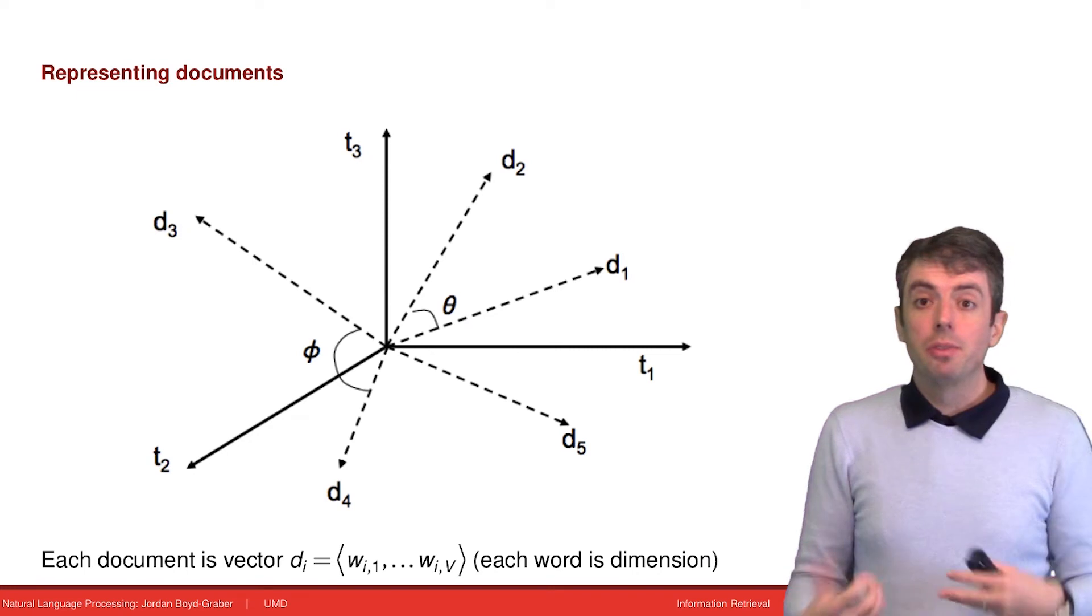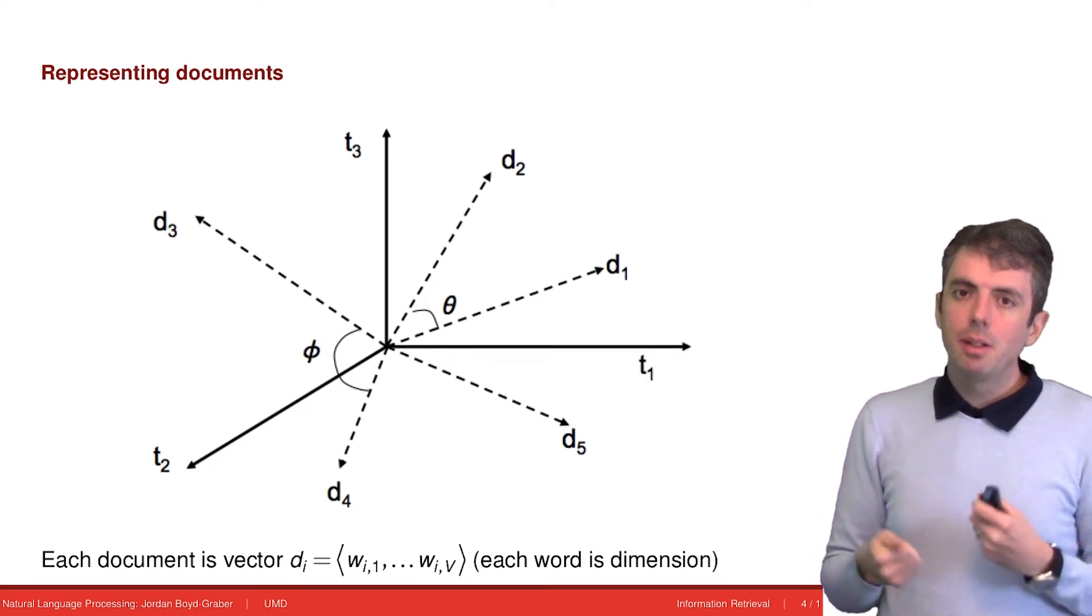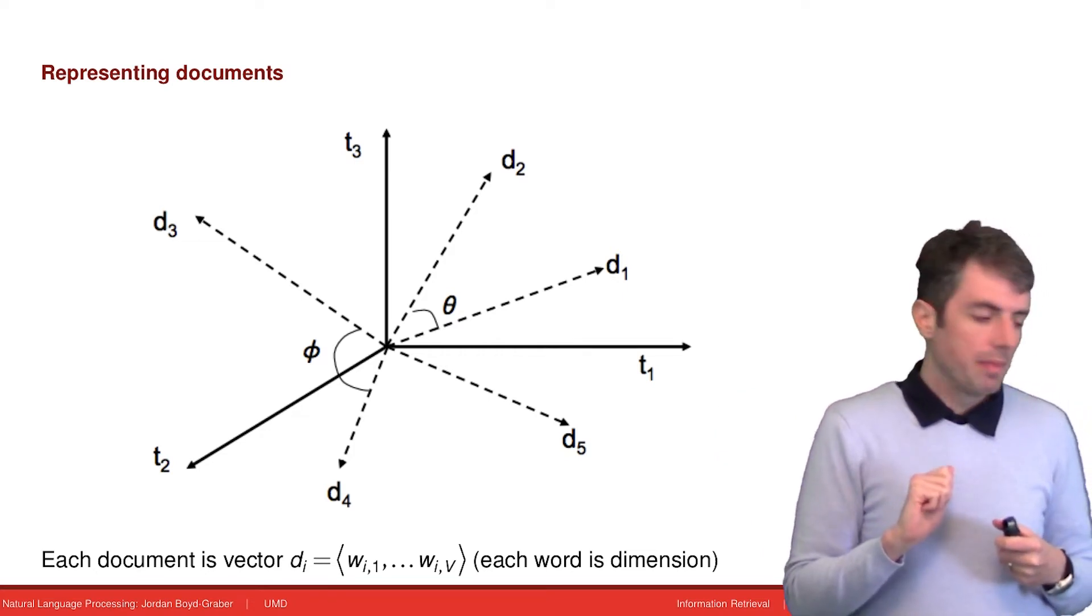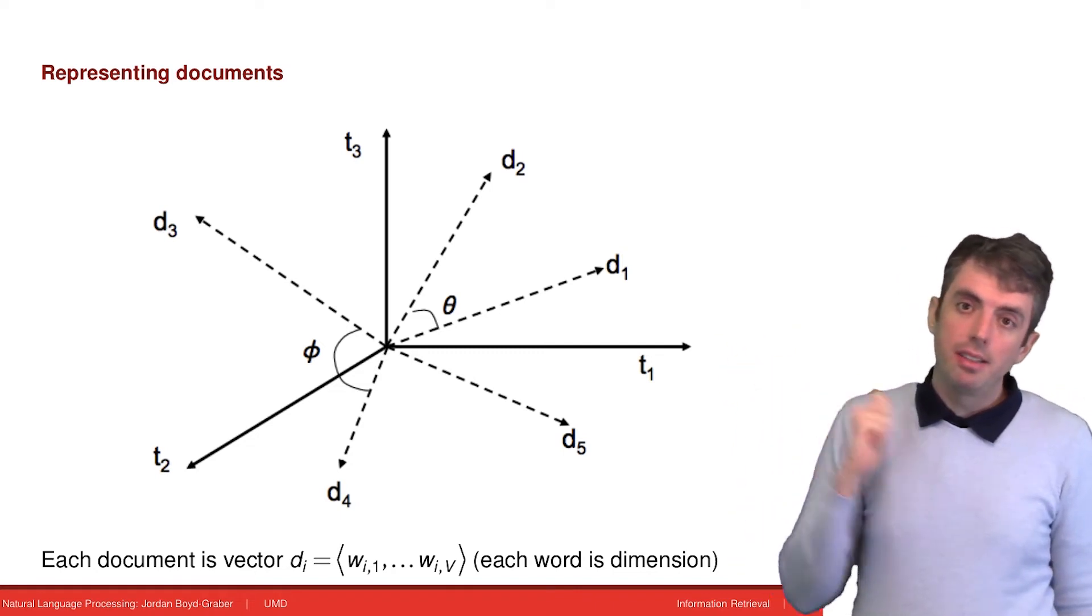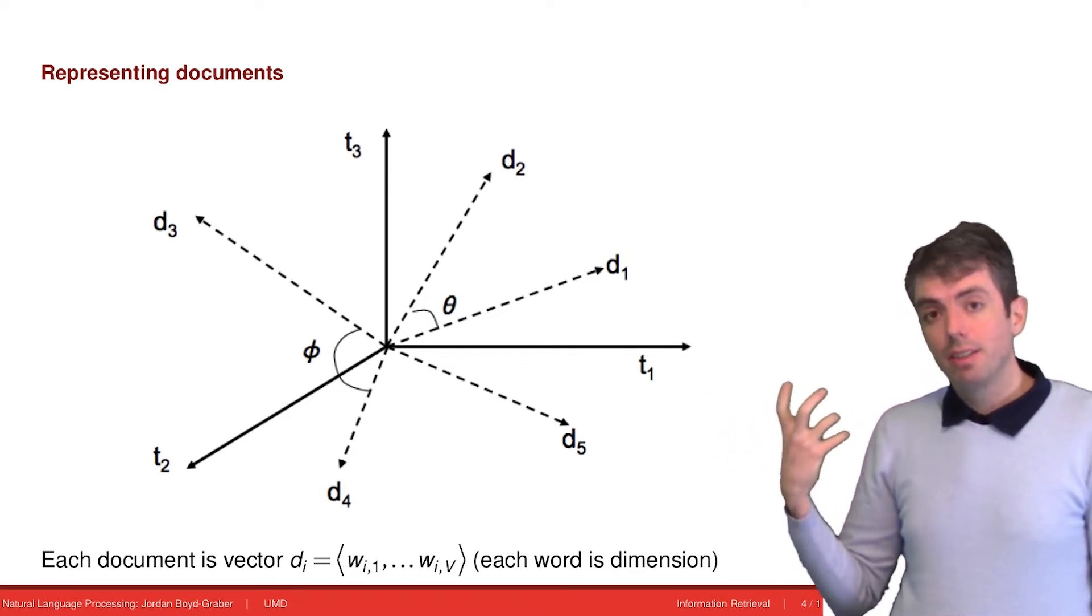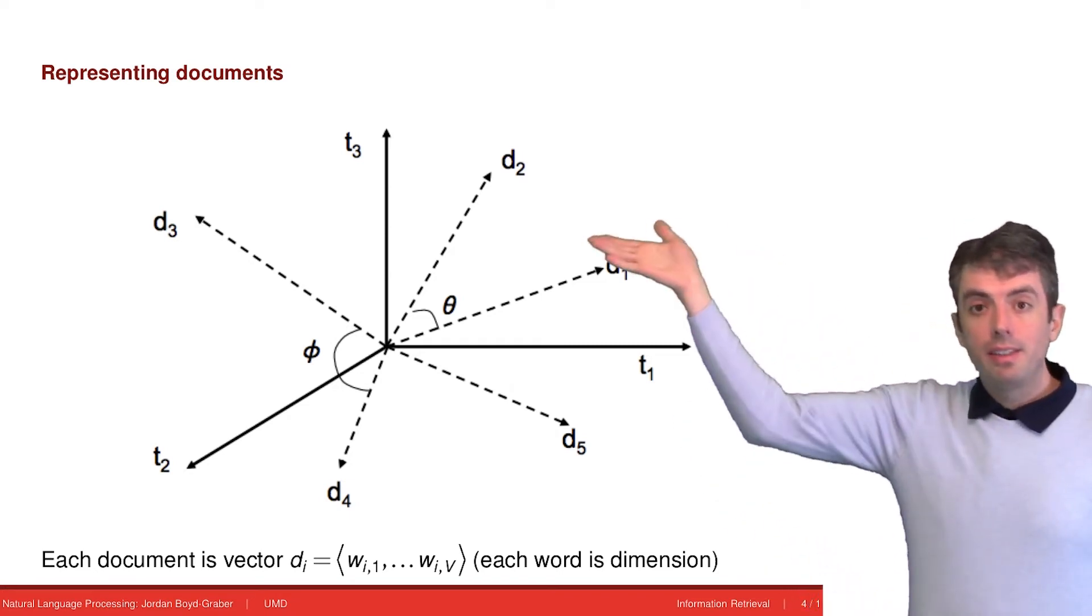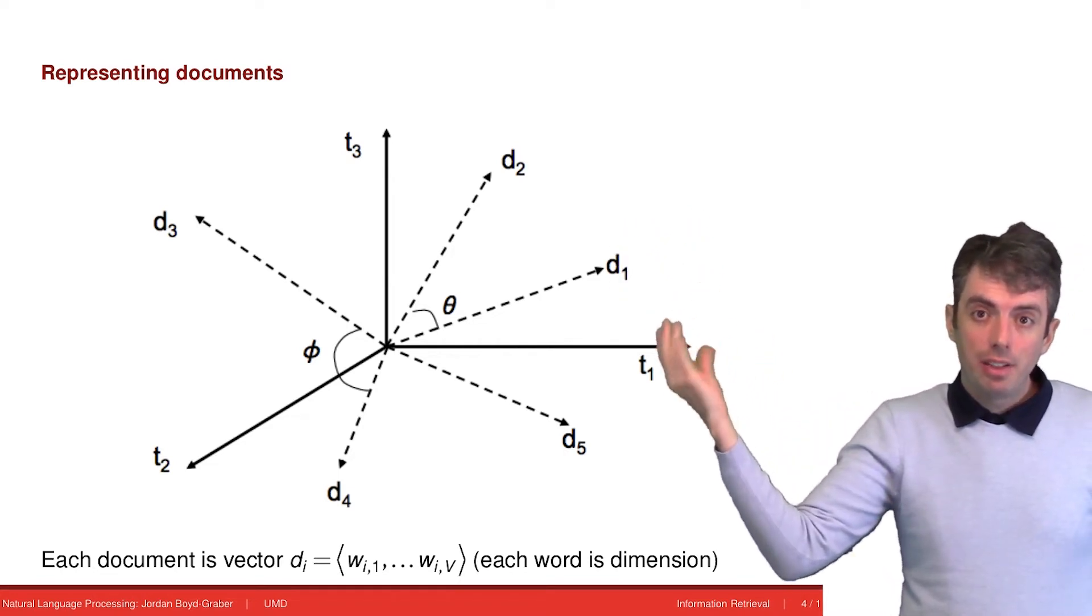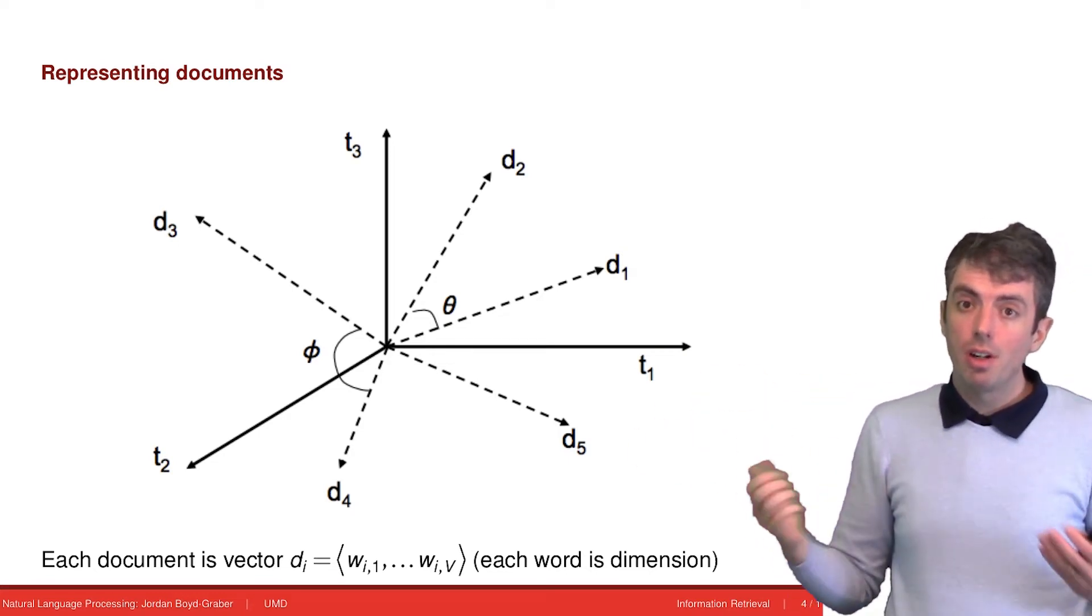Let's get back to information retrieval. Information retrieval uses vector representations of documents. And in this vector representation, each dimension of the vector corresponds to some word. And we're going to represent each document as a point in this vector space. And if documents share a bunch of words, they'll be considered similar. And if a query shares words with the document, they'll be considered similar. So in this drawing here, document 1 and document 2 are relatively close to each other. There's a smaller angle between them than, say, document 3 and document 4. They have a much larger angle between them.